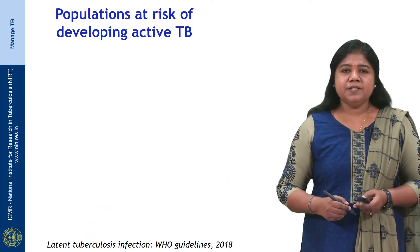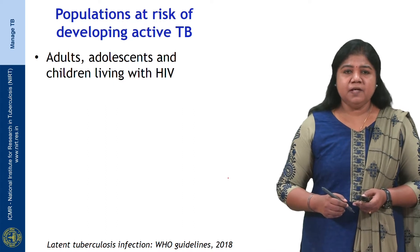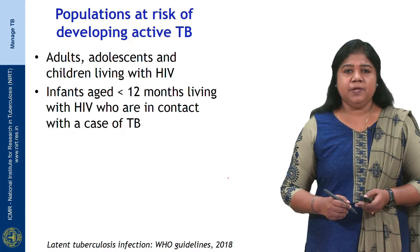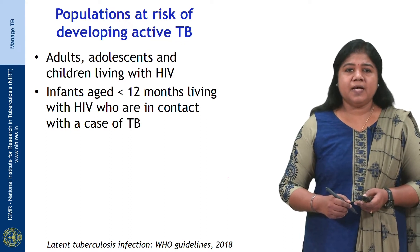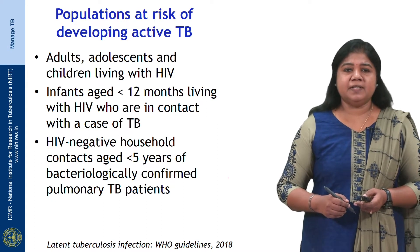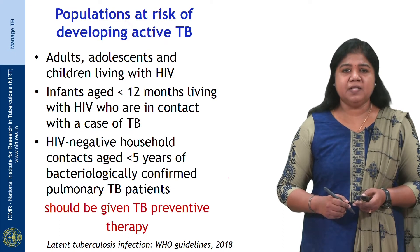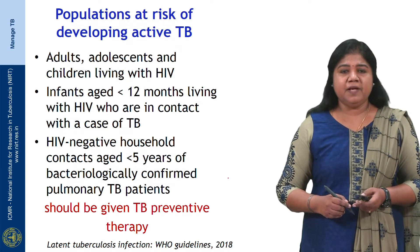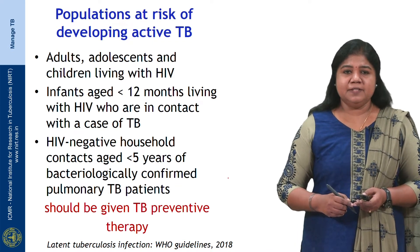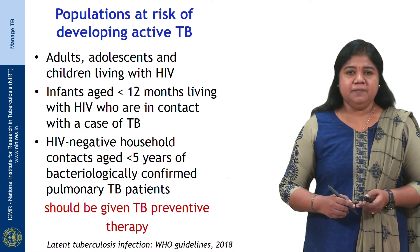The populations at risk of developing TB include adults, adolescents and children living with HIV; infants aged less than 12 months living with HIV who are in contact with a case of TB; and HIV-negative household contacts aged less than 5 years of bacteriologically confirmed pulmonary TB patients. These people should be given TB preventive therapy according to the WHO guidelines 2018 on the management of latent TB infection.